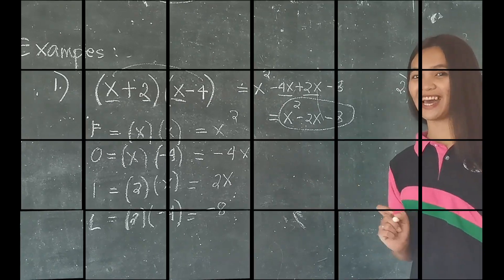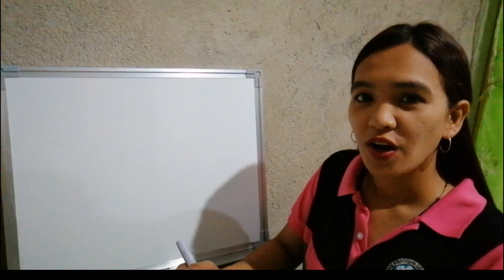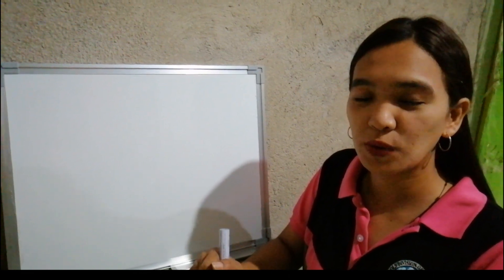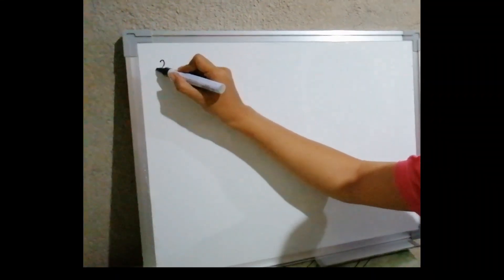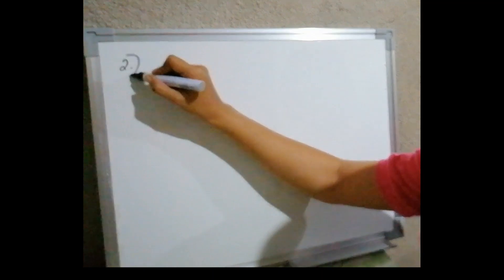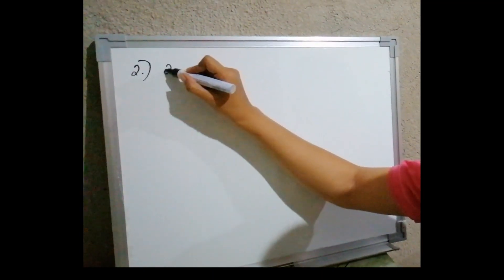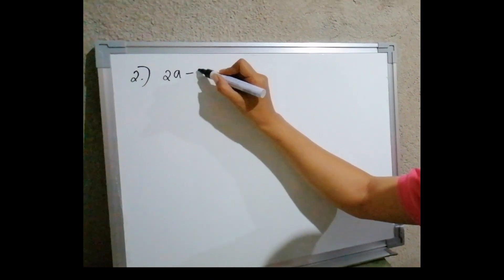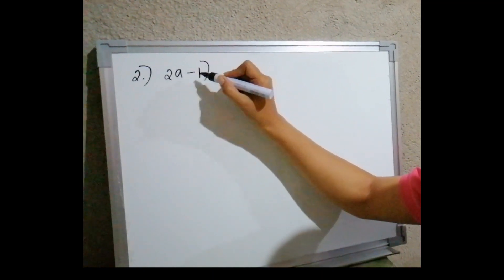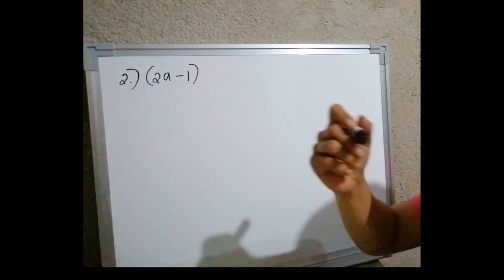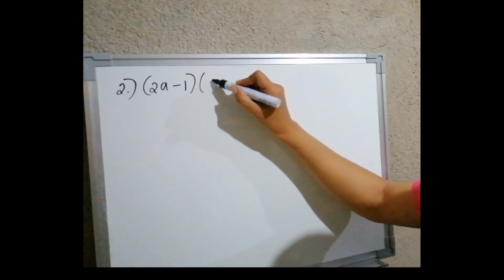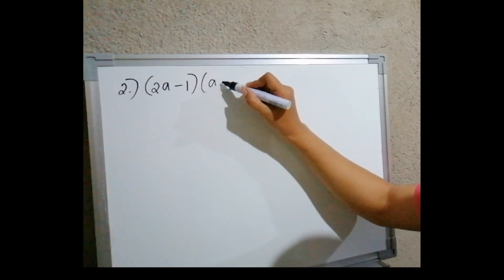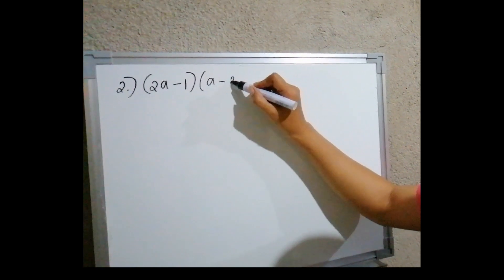As easy as that! Let's move to example number 2. We have 2a minus 1 being multiplied to another binomial, which is a minus 3.